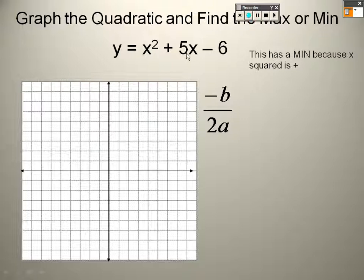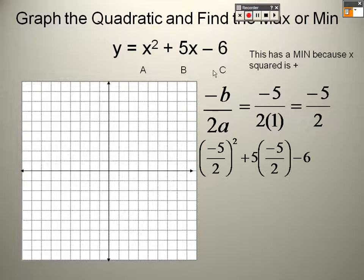So it's negative b, so b is 5 over 2a, and that happens to be a 1, so it's negative 5 over 2. But that's not the whole point, that's just the x. So I take that and I plug it in for x. So when I plug it in, negative 5 over 2 squared plus 5 over negative 5 over 2 minus 6.